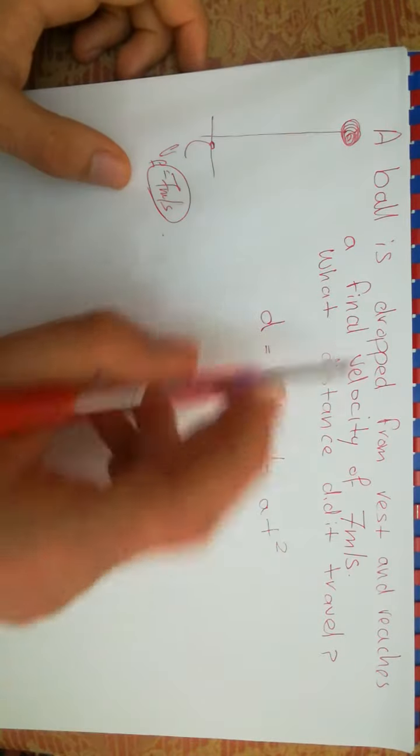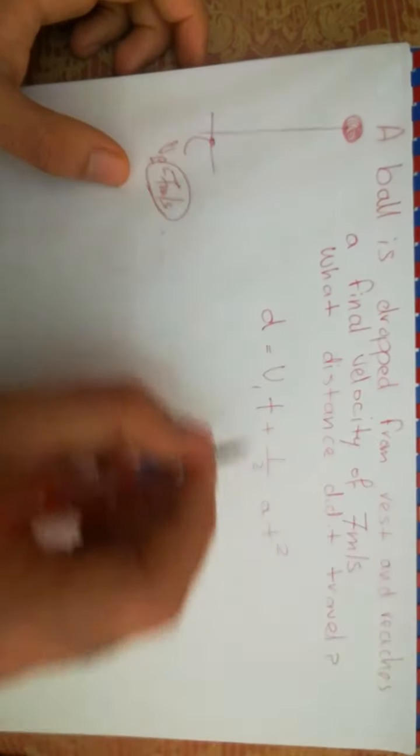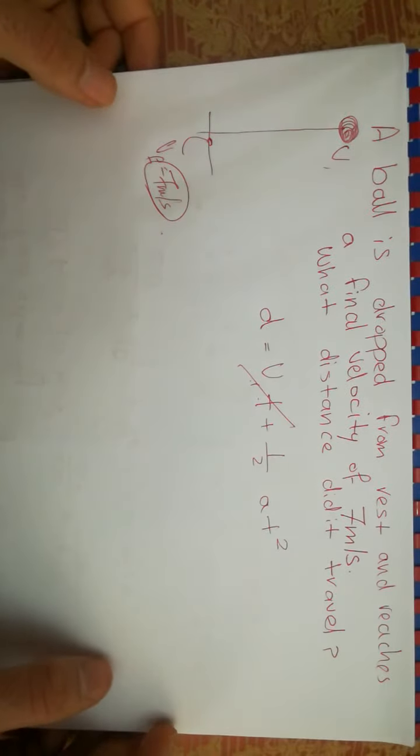And so since the ball was dropped from rest, the initial velocity is 0. So you can remove this part. And so we have half a*t squared.